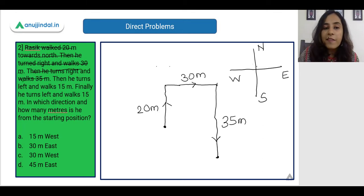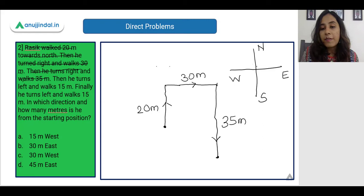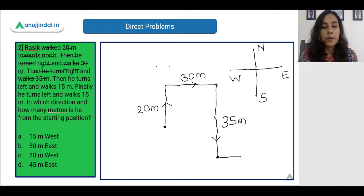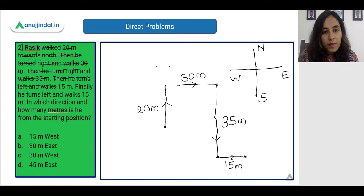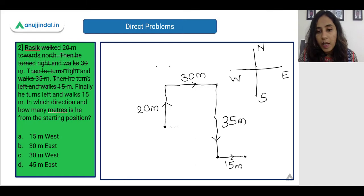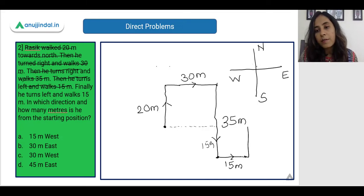Then he turns towards the left and walks 15 meters. His left is going to be the East direction — my right is going to be his left — and he is walking 15 meters. Finally he turns left again and walks 15 meters. So this is where he is going to be at the end.